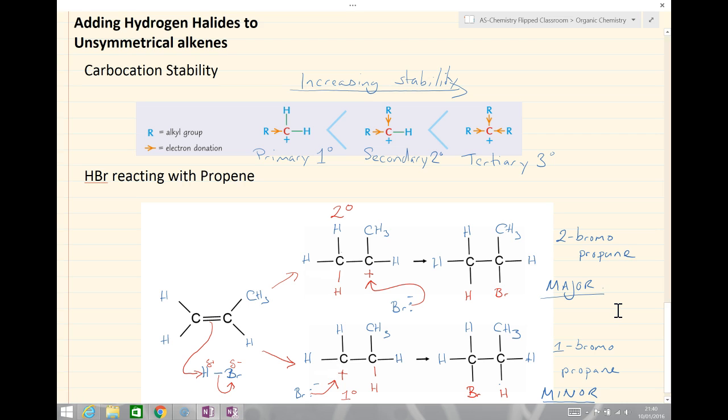The reason we have the major product is that the secondary carbocation is more stable than the primary carbocation and therefore more likely to form the major product. The secondary carbocation intermediate is more stable than the primary carbocation.